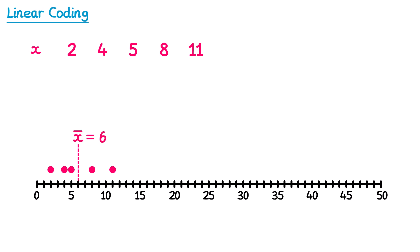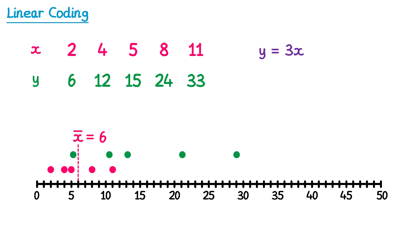Now let's look at a slightly different type of coding. Rather than adding or subtracting a value, what happens if we multiply or divide by a value? Let's code this data using the formula y equals 3x. So to get each of the y values, we'll multiply the x values by 3. So for the y values, we'll do 2 multiplied by 3, which is 6; 4 multiplied by 3, which is 12; 5 multiplied by 3, which is 15; and then 24 and 33. Visually, we've taken each of the x values and multiplied them by 3, which stretches the data out along the number line. Each of the green values are 3 times further away from 0 than the red values.